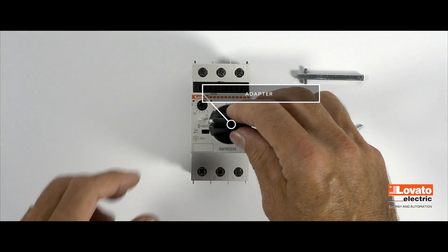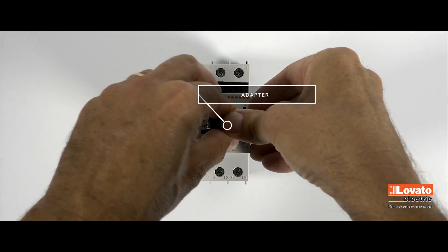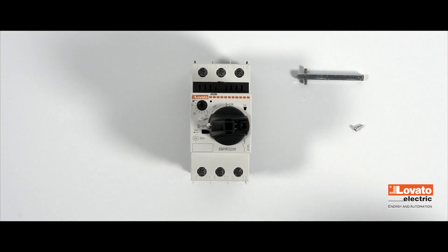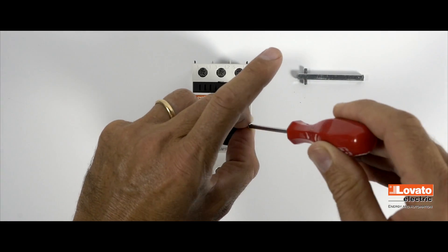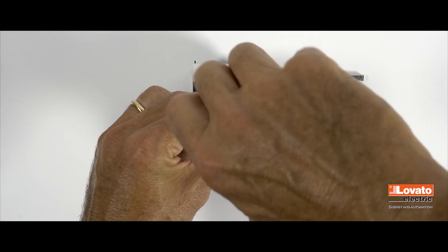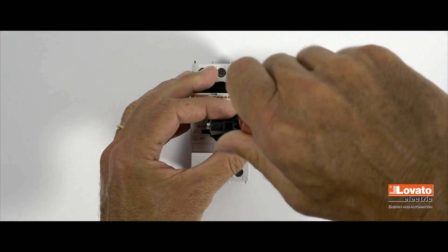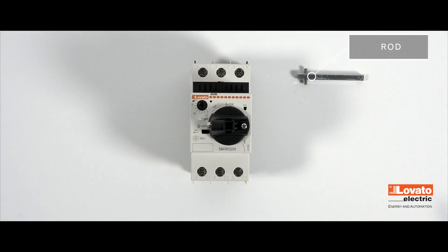Mount the adapter on the rotary control and secure it with a front screw. Insert the rod and fix it with a side screw.